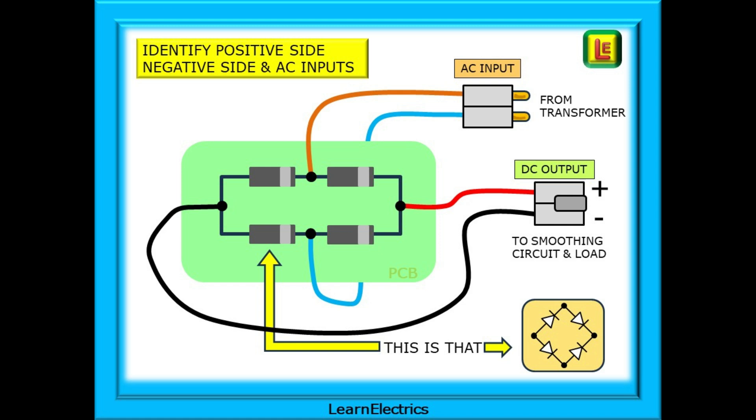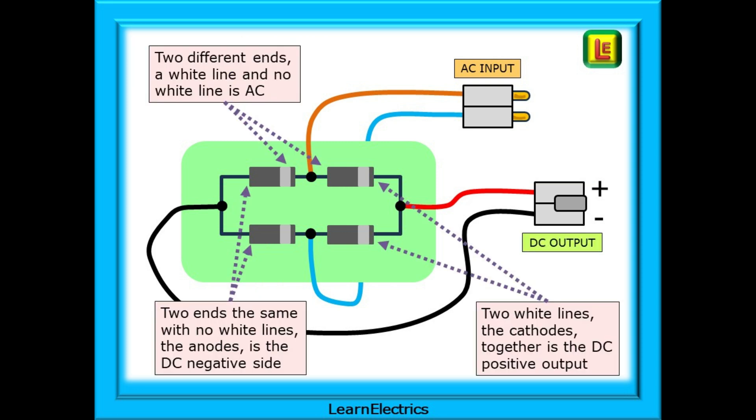If we now look at the top two diodes on their own, they are joined together in the middle, one at the anode and the other at the cathode. Different ends are joined together. This is one of the AC input connections. And the second AC connection is the lower pair of diodes, again joined in the middle at the anode and cathode. Easy to remember. Two cathodes, two white lines together, is the DC positive. Two anodes together, no white lines or white rings, is the DC negative. And two opposites joined together, an anode and a cathode, is an AC connection.